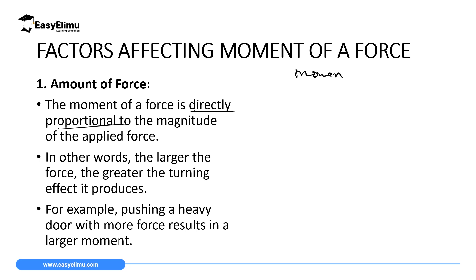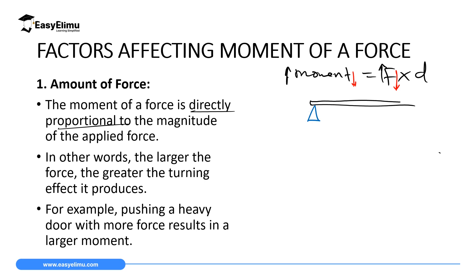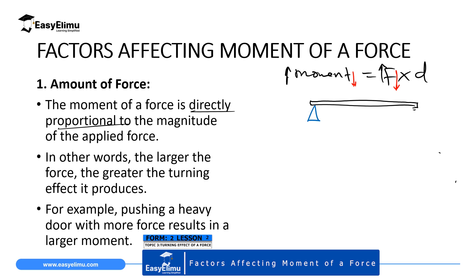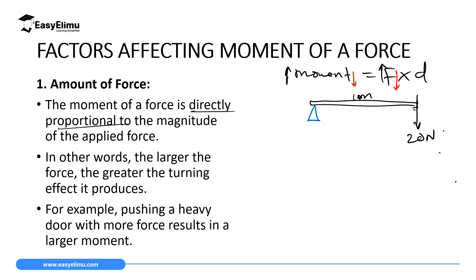Our formula is: moment equals force times perpendicular distance. So when you increase force, moment also increases; if you decrease force, moment will decrease. For example, if you have a pivot with a meter rule lying on it at a distance of one meter, and a force of 20 newtons acting perpendicularly, then moment equals 20 newtons times 1 meter, which gives us 20 newton-meters.